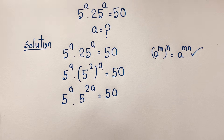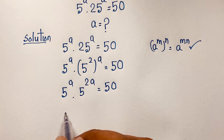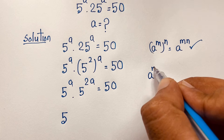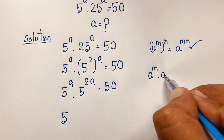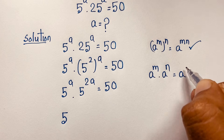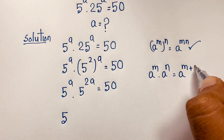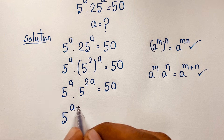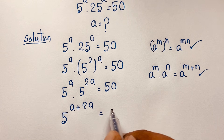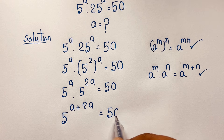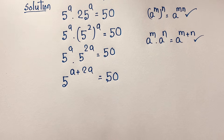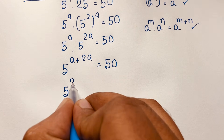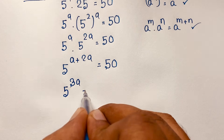Now at this moment, I apply the exponential formula again: a to the power m times a to the power n equals a to the power m plus n. If I apply this formula here, it will be 5 to the power a plus 2a, is equal to 50. So this simplifies to 5 to the power 3a, is equal to 50.